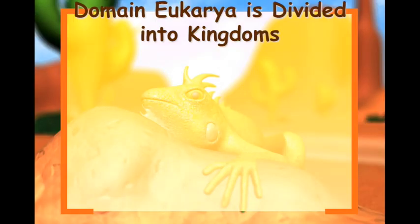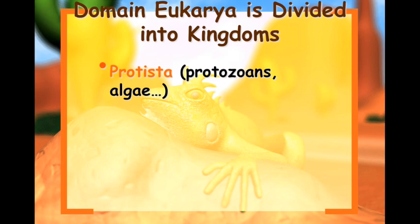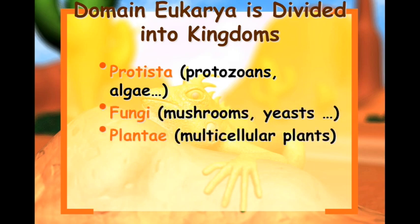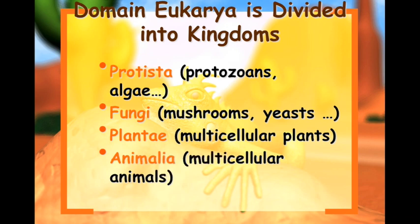The domain Eukarya is divided into kingdoms. We have Protista, Fungi, Plantae, and Animalia. So the four kingdoms under Eukarya, along with Archaea and Eubacteria, make six kingdoms total.